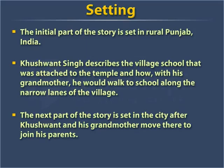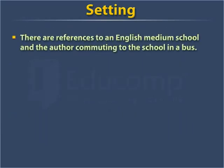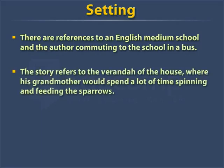The next part of the story is set in the city after Khushwant and his grandmother move there to join his parents. There are references to an English medium school and the author commuting to the school in a bus. The story refers to the veranda of the house, where his grandmother would spend a lot of time spinning and feeding the sparrows.